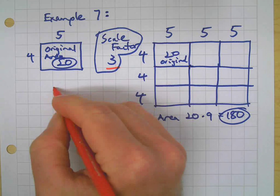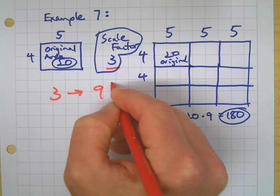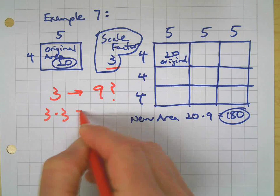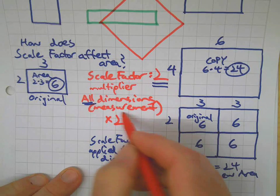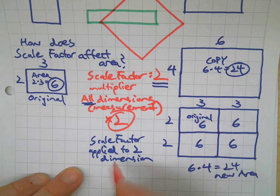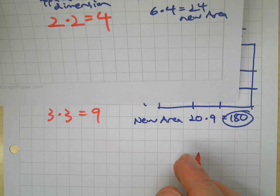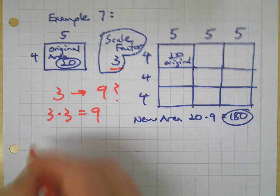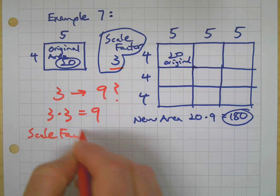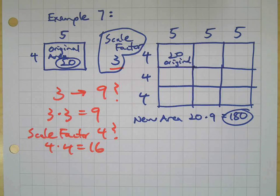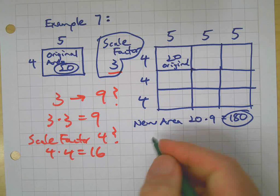What's the relationship between three and nine? Well, three times three equals nine. Just like in our previous example, where our scale factor was two — the original got multiplied by four, so it was two times two. See something going on here? Two times two is four, three times three is nine. What would happen if the scale factor was four? It'd be four times four — so the original would be multiplied by sixteen.